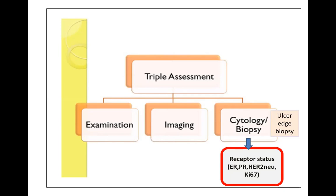Additionally, we will also want some receptor status studies to see whether this patient is ER — that is estrogen receptor — positive, PR — that is progesterone receptor — positive. Besides this, you can also have KI-67 index to see the prognosis of the disease.